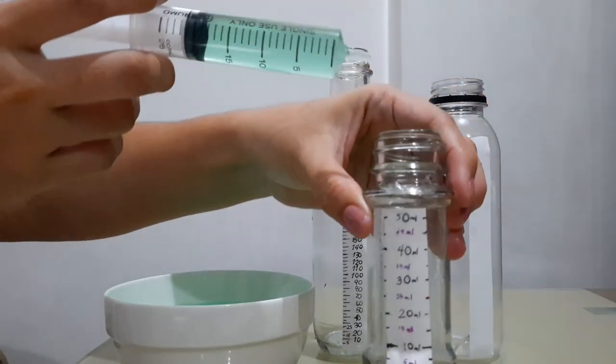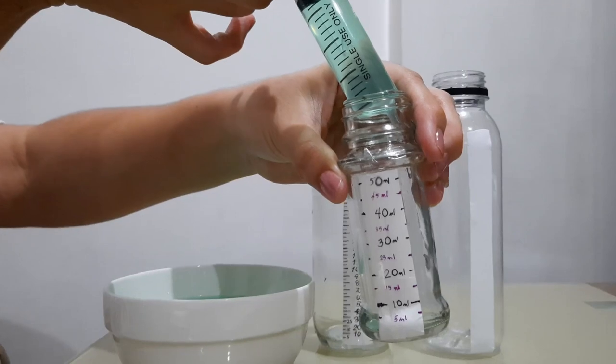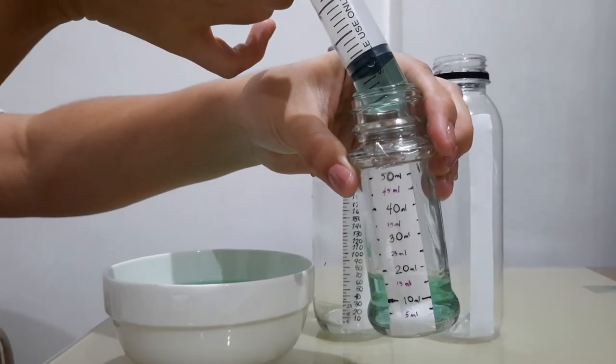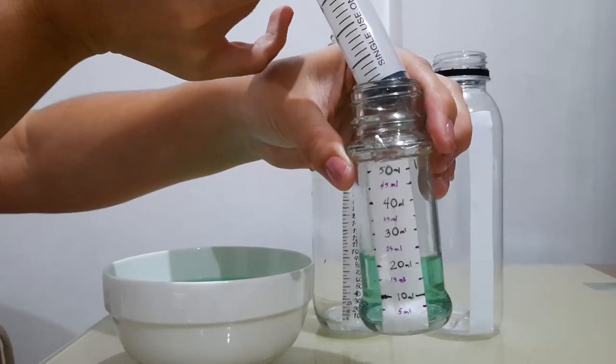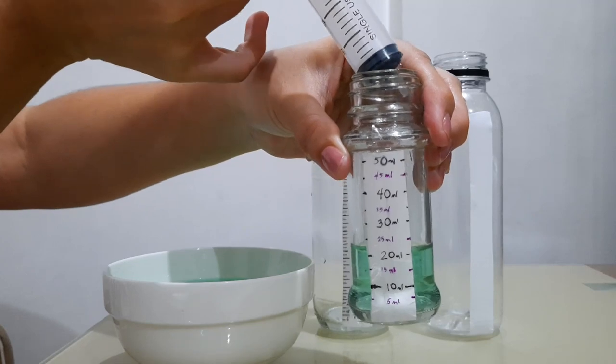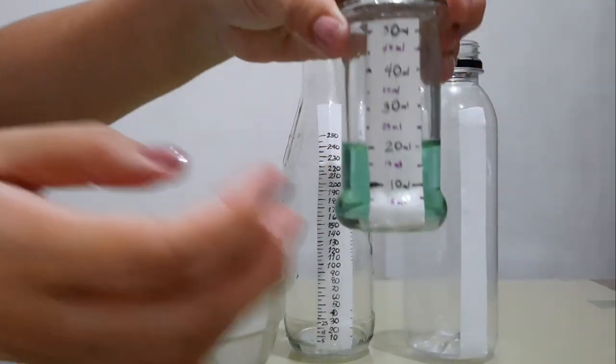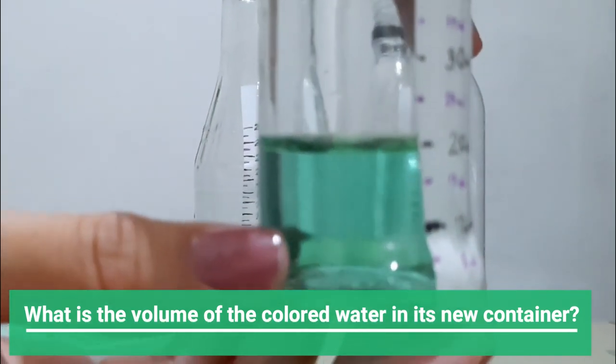Now what happens if I remove my forefinger, place the nozzle into the DIY graduated cylinder, and carefully push the plunger. Watch carefully and record your observation. Let's see.